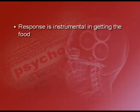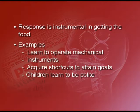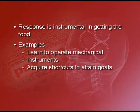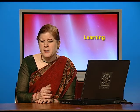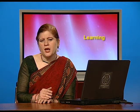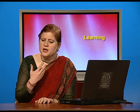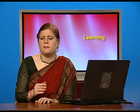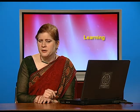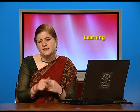The response becomes instrumental in getting the food. You learn to operate mechanical instruments in your real life going by this kind of conditioning. Human beings usually acquire shortcuts to attain their goals in life going by the principle of operant conditioning. Certain maladaptive behaviours are also learnt this way. For example, if you were less prepared for your exam, you cheated from your best friend's sheet and got good marks — nobody taught you this behaviour, but getting good marks because of cheating establishes the behaviour in your mind.